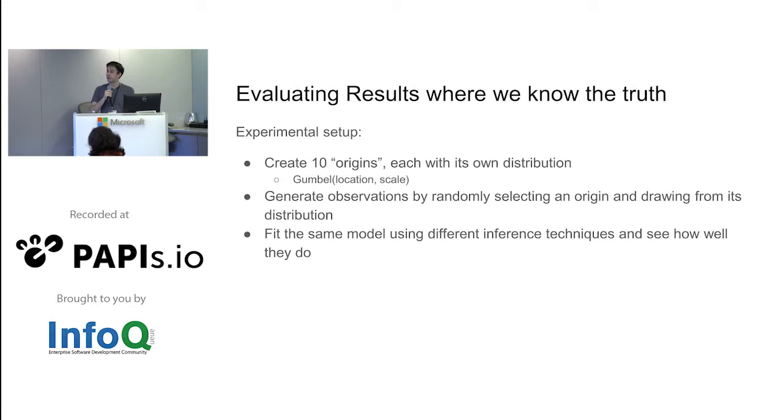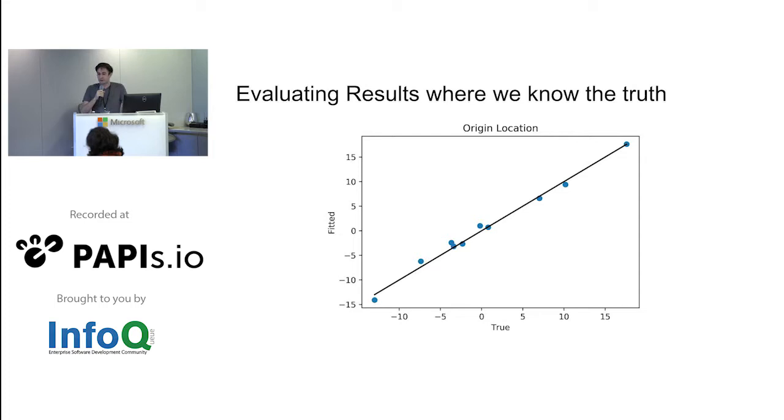Here's our experimental setup. I'm going to create 10 origin airports - these are just groupings. In my hierarchical model, I have O and D. So I'm creating 10 fake O and Ds. Each has their own location and scale parameter. Then I'm going to generate observations by randomly selecting origins and then randomly drawing from that origin's distribution. Then I'm going to fit that model using both MCMC and variational inference, and then minibatch variational inference, stochastic variational inference, and see how well they do both in terms of accuracy, how well they recover the parameters, as well as how fast they are.